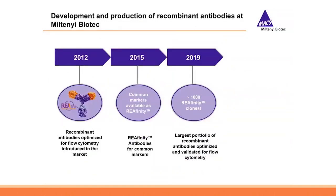Already in 2012, the first recombinant Reaffinity antibodies entered the market, optimized specifically for flow cytometry applications, making Miltenyi the first provider of recombinant antibodies for flow cytometry. By 2015, Reaffinity antibodies for all markers commonly used in flow cytometry were available. Now in 2019, we offer the largest portfolio of recombinant antibodies for flow cytometry with around 1,000 different clones available.